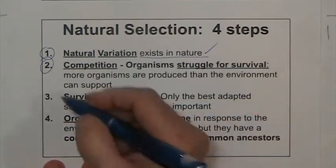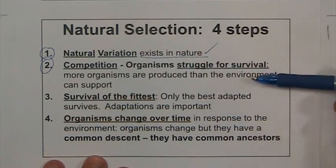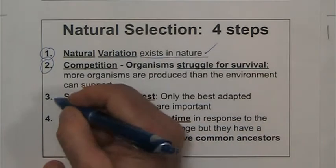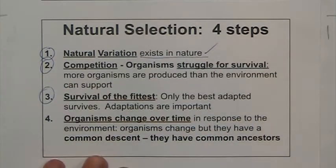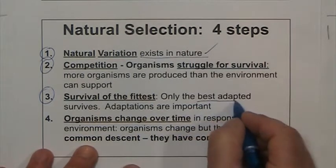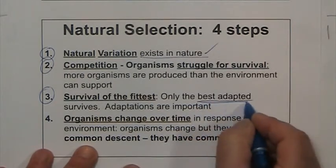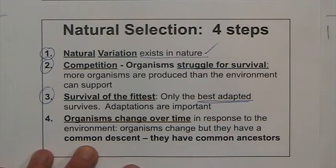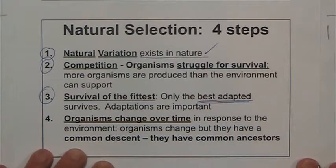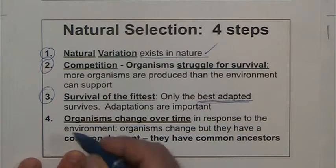Since we have variation, and since there is competition because resources are limited, that's going to mean that only a few individuals are going to survive. And the ones that survive are the ones that are best adapted — basically, the ones that have the best set of traits that allow them to deal with the environment.